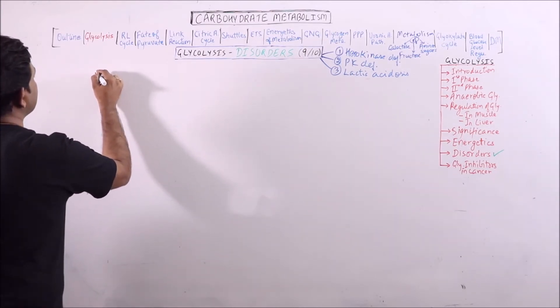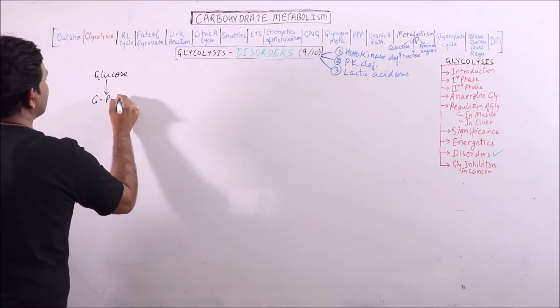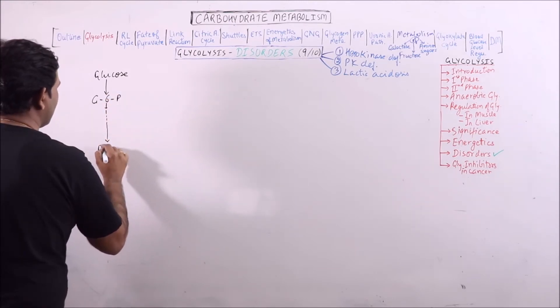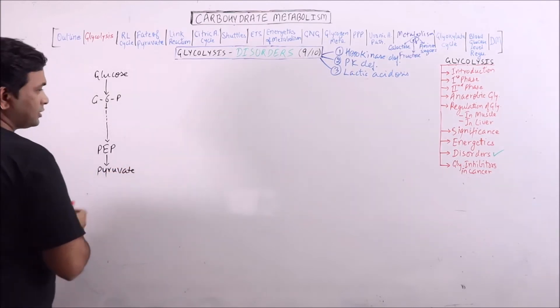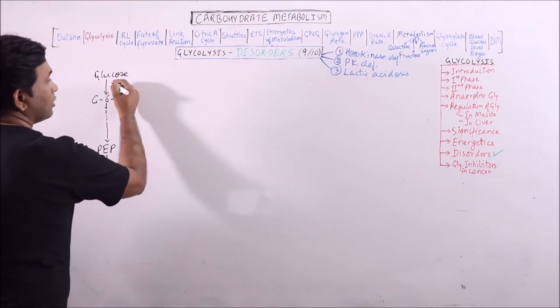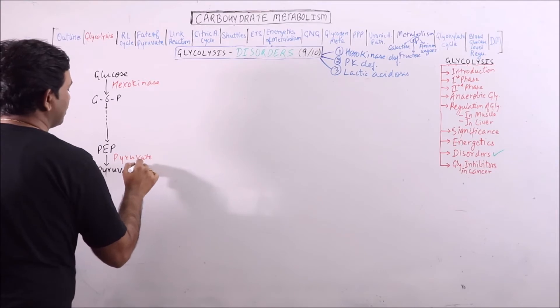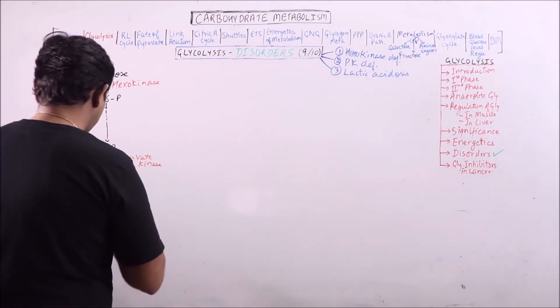This is glucose, and hexokinase mediates the phosphorylation of glucose to form glucose 6-phosphate. Finally, phosphoenol pyruvate is formed which is converted to pyruvate. This step is catalyzed by pyruvate kinase. These are the two conditions.